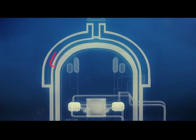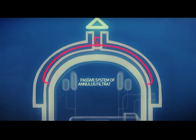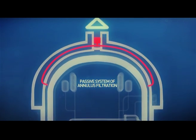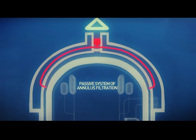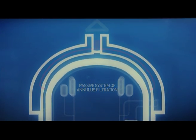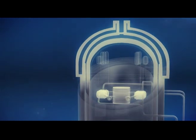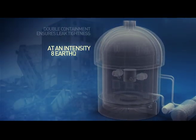There is an annulus between the inner and outer shielding. It is fitted with a system to filter gases incoming from the reactor hull. The reinforced double containment retains leak tightness at an intensity 8 earthquake and a crash of up to 200-ton aircraft.